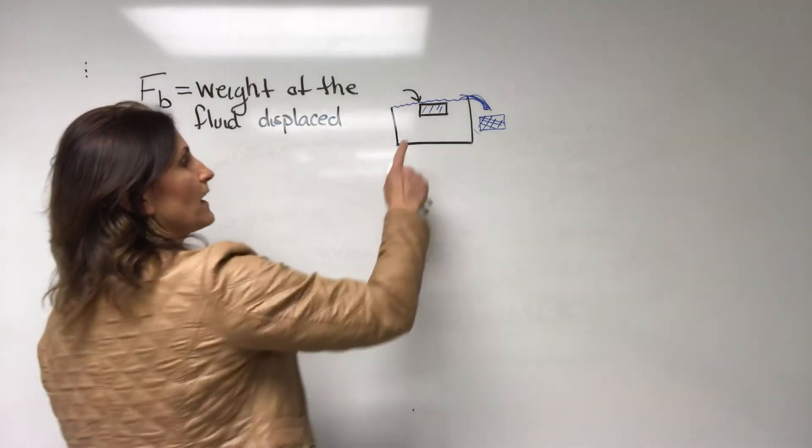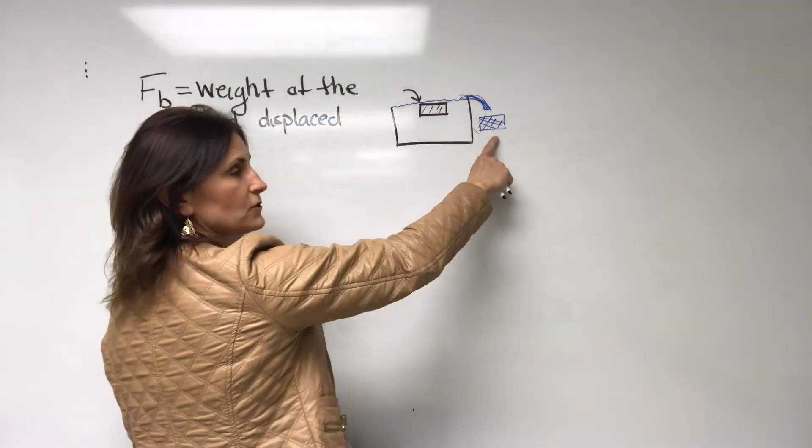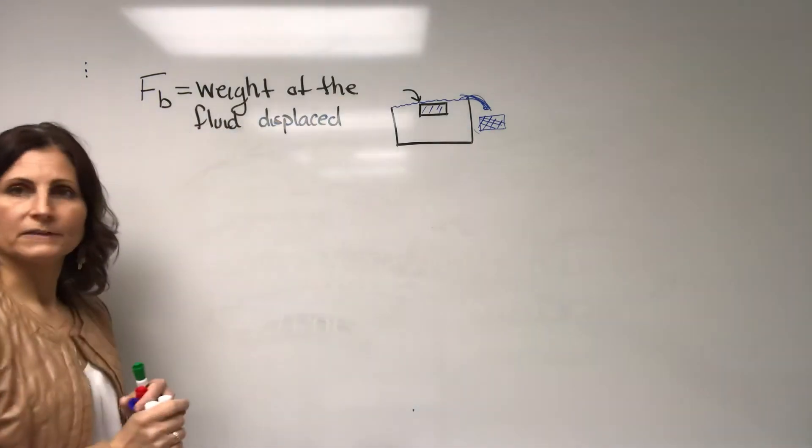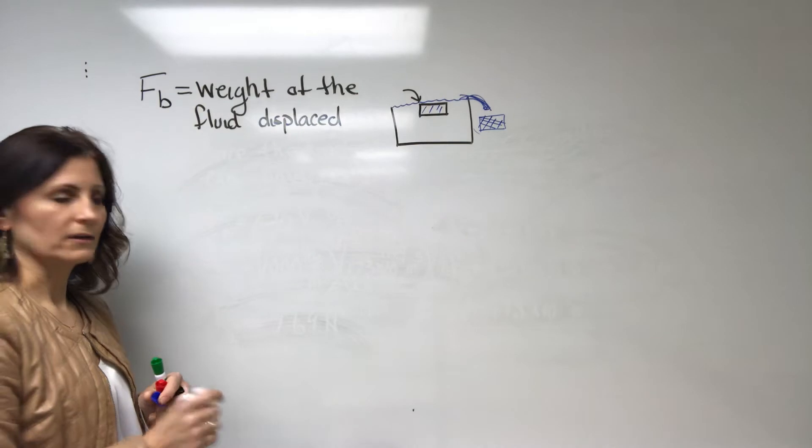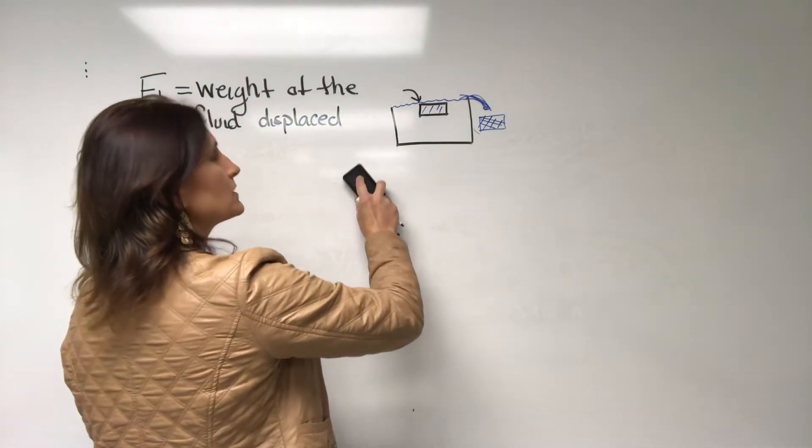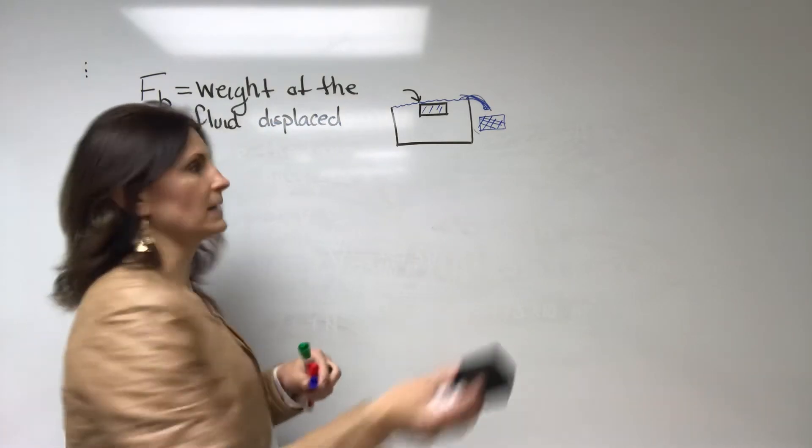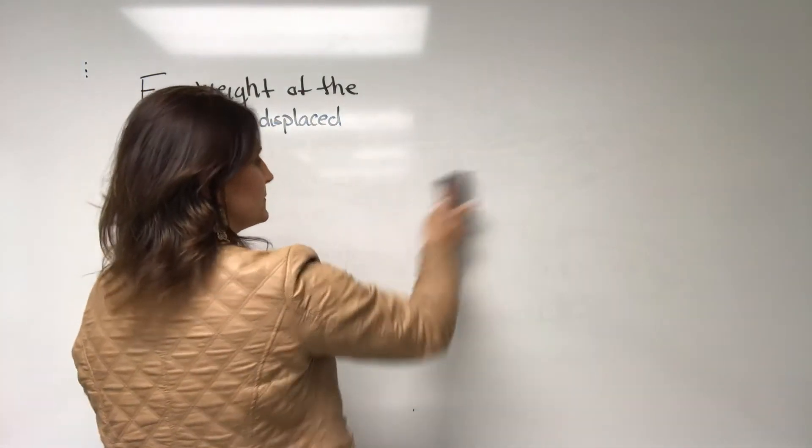So if I only submerge half of this in, it's only going to displace half of that fluid. So it's the weight of that fluid that gets displaced that determines our buoyant force. Right so sometimes you don't have the whole thing submerged which is what we saw with the plastic bucket. The whole thing did not need to be submerged.